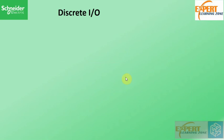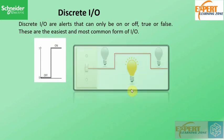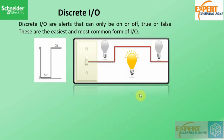What are discrete input outputs? Discrete input outputs are signals that can only be on or off, true or false. They are the easiest and the most common form of input output. Think of a simple light switch in your house where the switch either turns the light on or off. Because discrete signals exist in one of two states, they are represented with a square signal to show their on and off state.